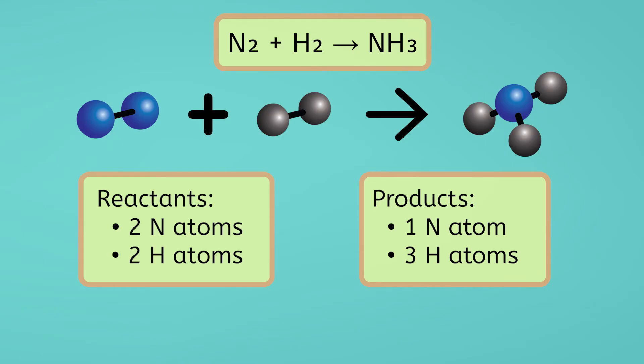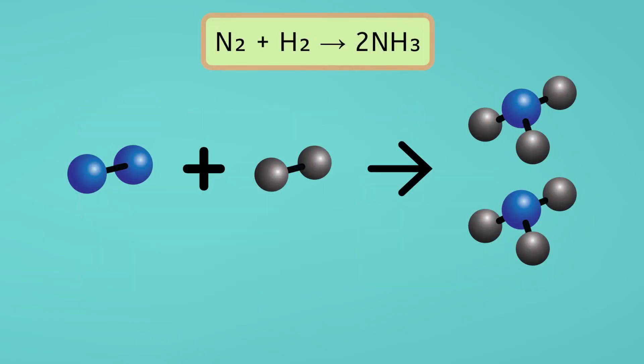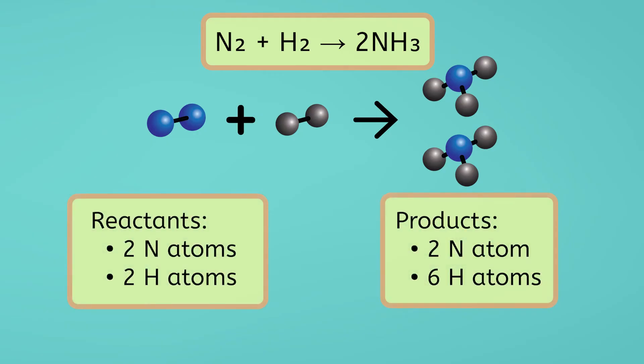Let's try to balance our nitrogen atoms first. We have two in our reactants and just one in our products. We can place a two in front of NH3 in the products. Let's update our list. By placing a two in front of the molecule, we now have two of those molecules. This means we have two nitrogen atoms, one in each molecule, and six hydrogen atoms, three in each molecule.